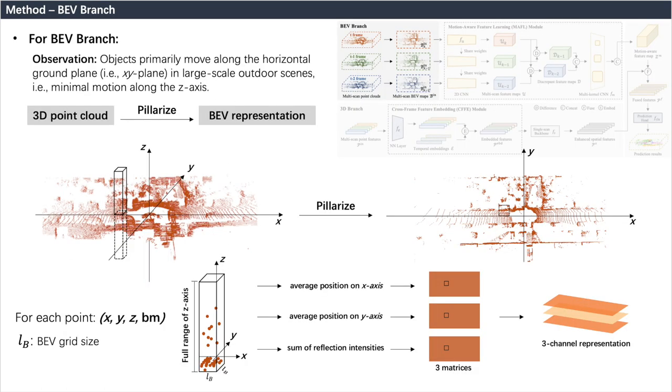Based on our observations, almost all object movements in large outdoor scenes occur on the horizontal ground plane, and few objects move purely vertically. Therefore, we propose BEV branch and adopt BEV representation as the input.